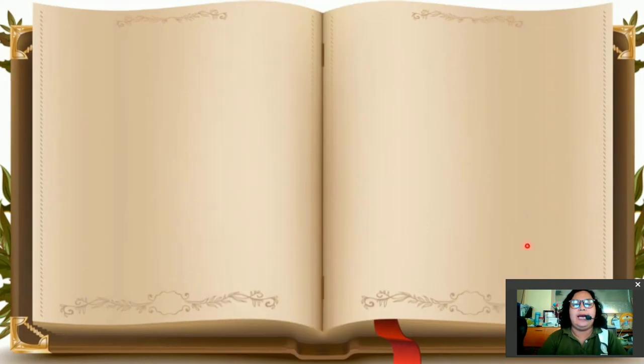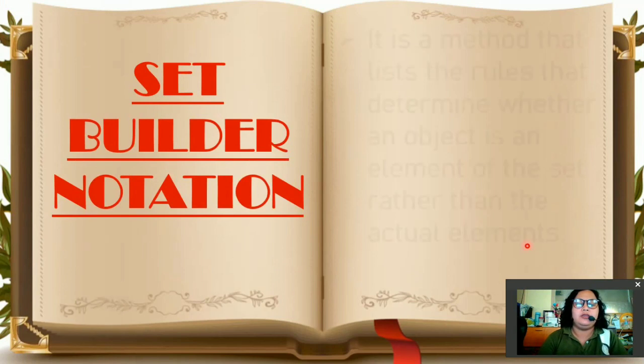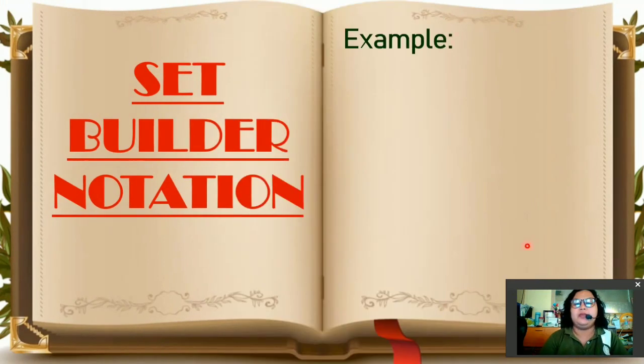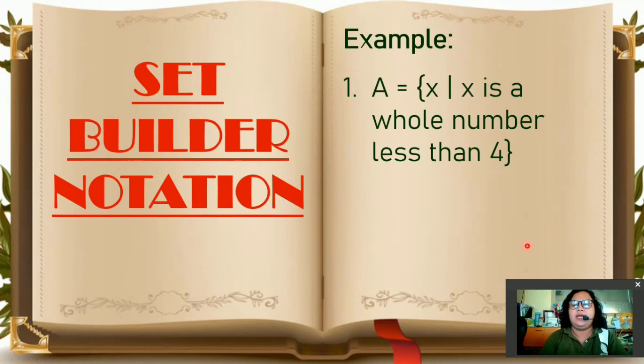We are now ready for the last ways on how to represent sets. Set builder notation. So it is a method that lists the rules that determine whether an object is an element of the set rather than the actual elements. So, example. So if we have set A equals. So we read this as the set of X such that X is a whole number less than 4. So that is how we write using set builder notation.